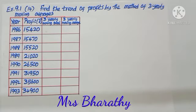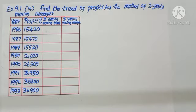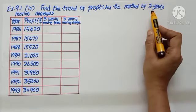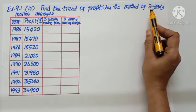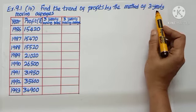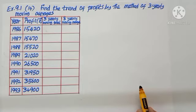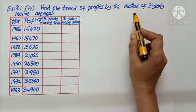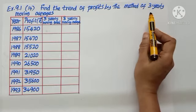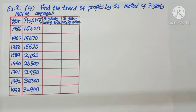Good morning children, in today's class we are going to learn the method of finding trend using moving average method. In moving average method, they will mention in the question what would be the moving period. It could be 3, 4, 5, like that.